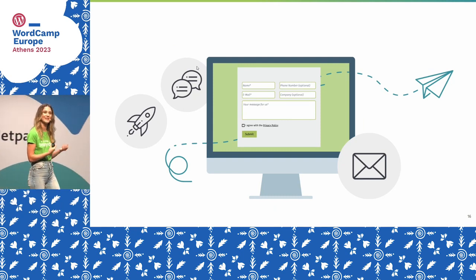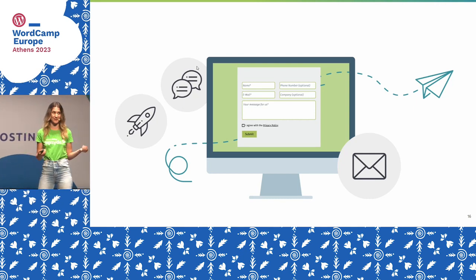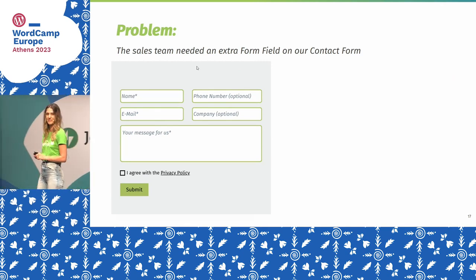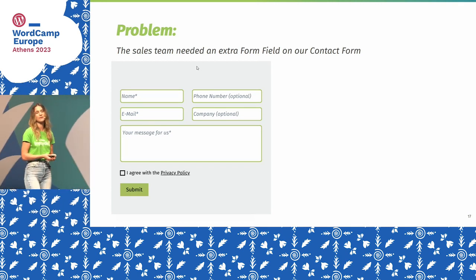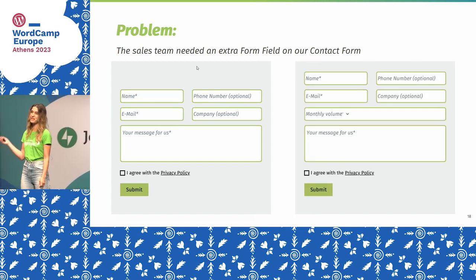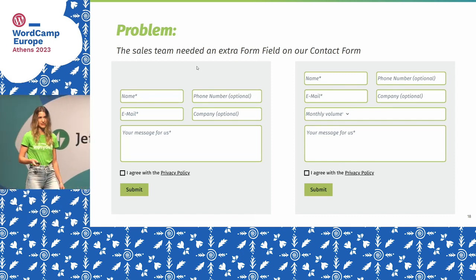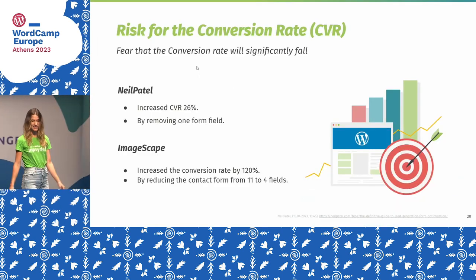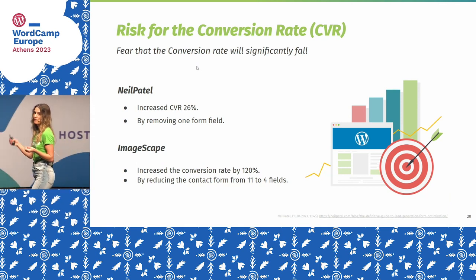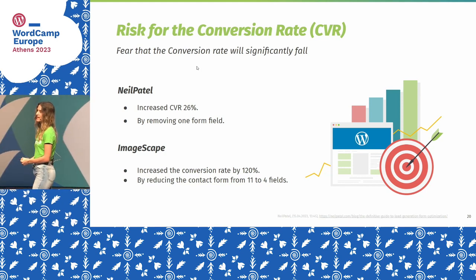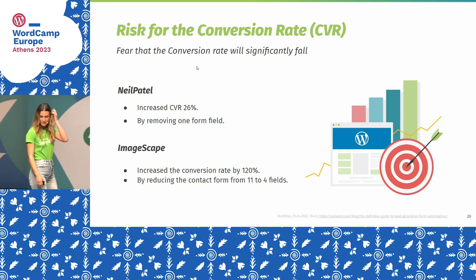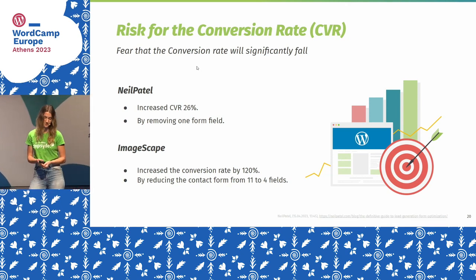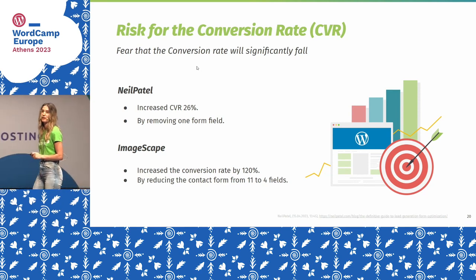I'd love to start by talking about the contact form — it's something very important for a marketer. We had a problem: the sales team told me they needed one more form field to structure their leads better. They wanted to include the monthly volume. That was a big concern for me, because normally if you add one more form field, the conversion rate drops. For example, Nail Petal increased their conversion rate 26% by removing just one form field. And ImageScape increased theirs 120% by removing a lot of form fields.